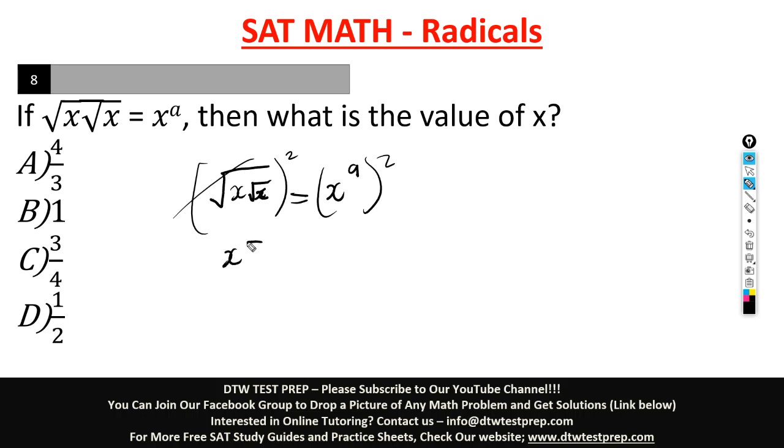So you're left here with x times square root x equal to xa multiplied by xa. Remember in exponents, when you have the same basis, the powers we add, not multiply. That's a mistake students make, they multiply, but it will add. So you should have x raised to the power of a plus a, which is 2a. So you have x raised to the power of 2a here.